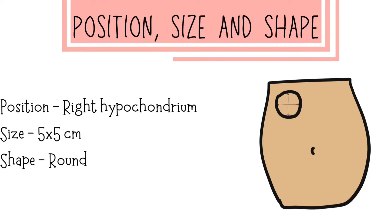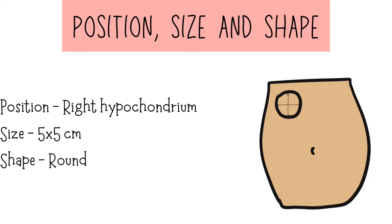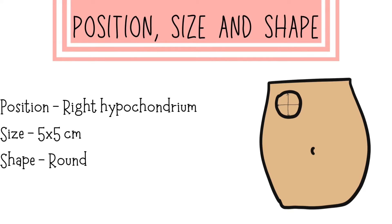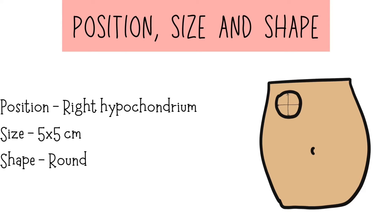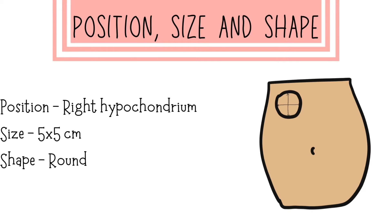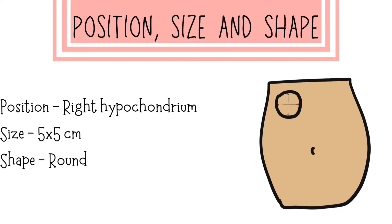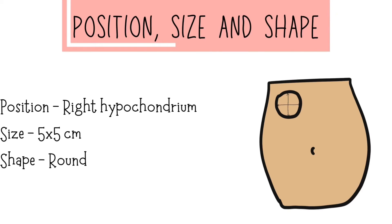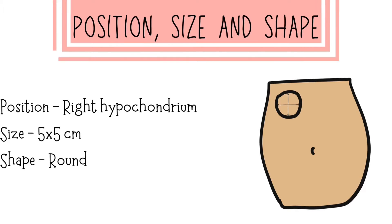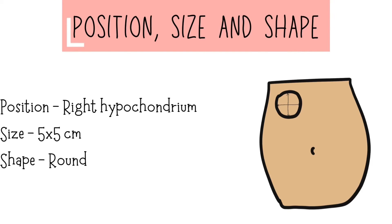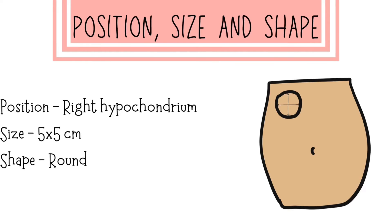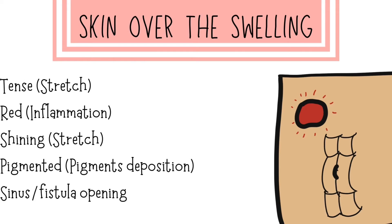We have to approximately tell the size of the swelling just by seeing it — here we say it is approximately five by five centimeters. We also have to comment on the shape of the swelling; here we say it is round in shape, though the shape may not always be clearly made out.